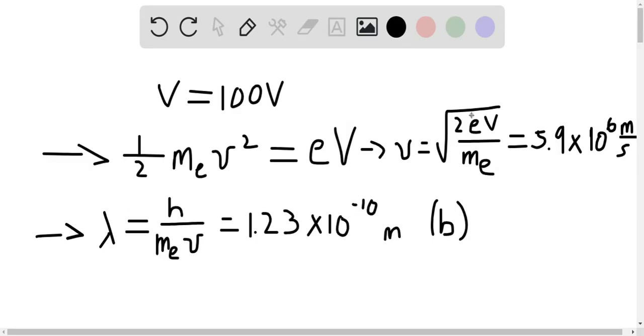So if we have a new potential, V prime, which is equal to 10 times V, or excuse me, 100 times V, since V prime is equal to 10,000 volts and V is equal to 100 volts.